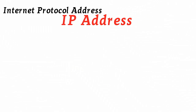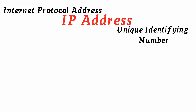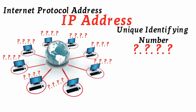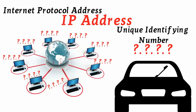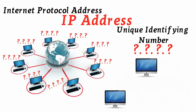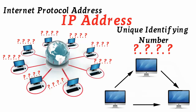IP Address, or Internet Protocol Address, is a unique identifying number given to every single computer on the Internet. Like a car license plate, an IP address is a special serial number used for identification. It allows the computer systems or machines to be located by other systems in the world.